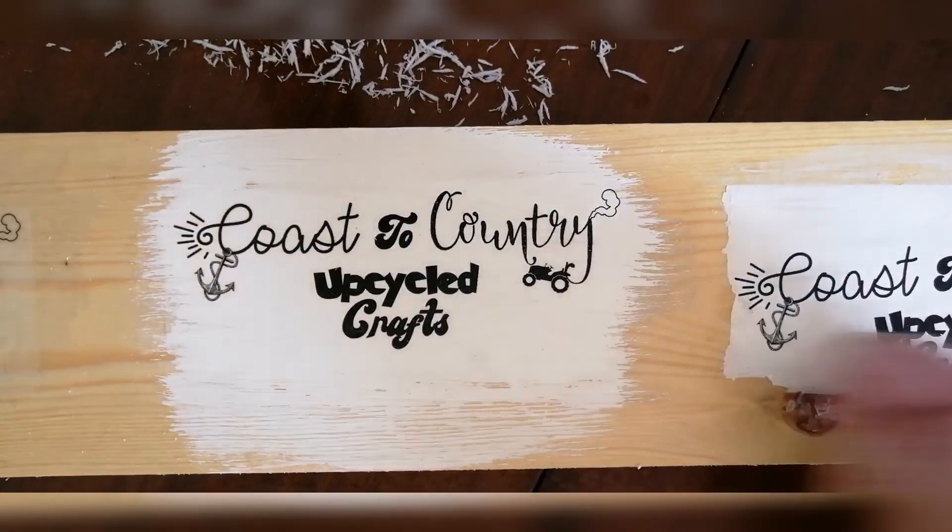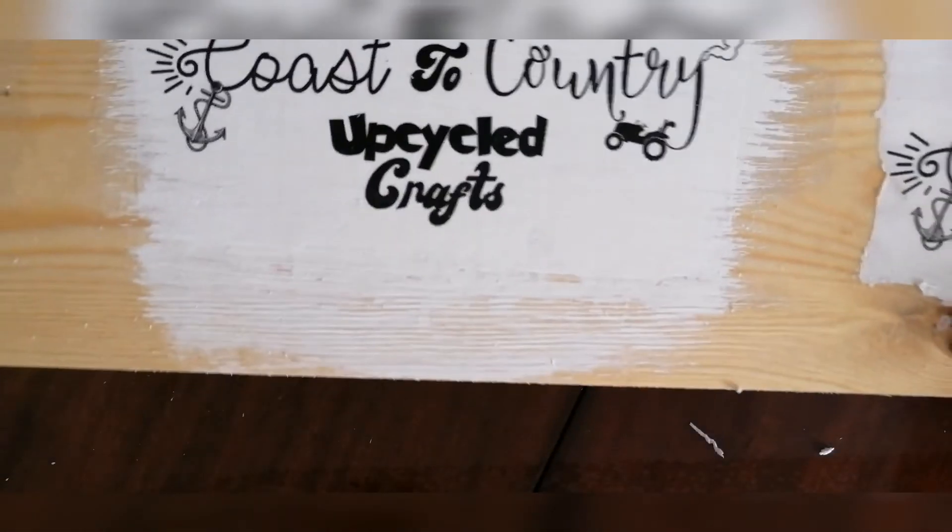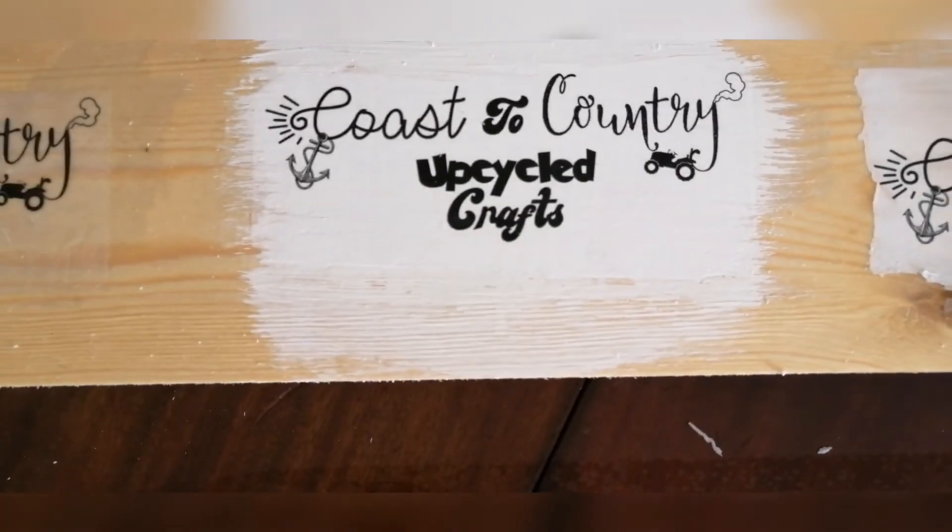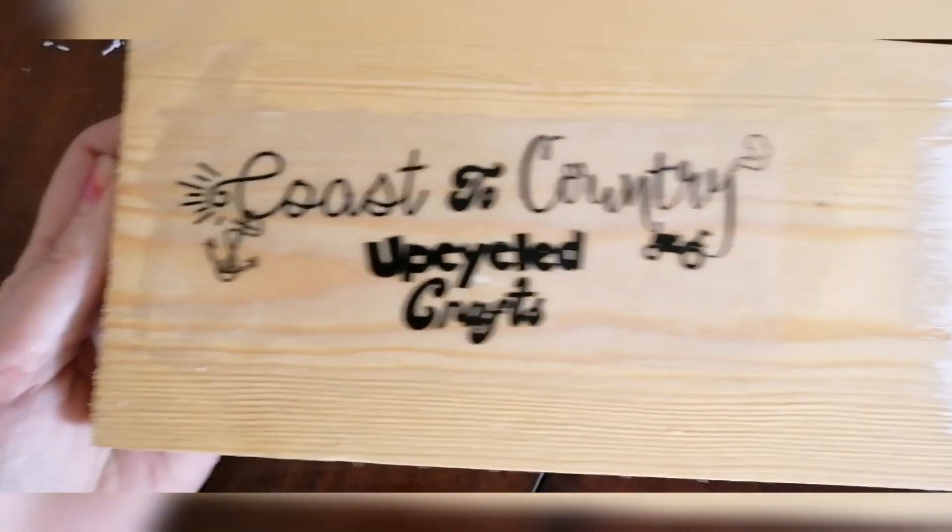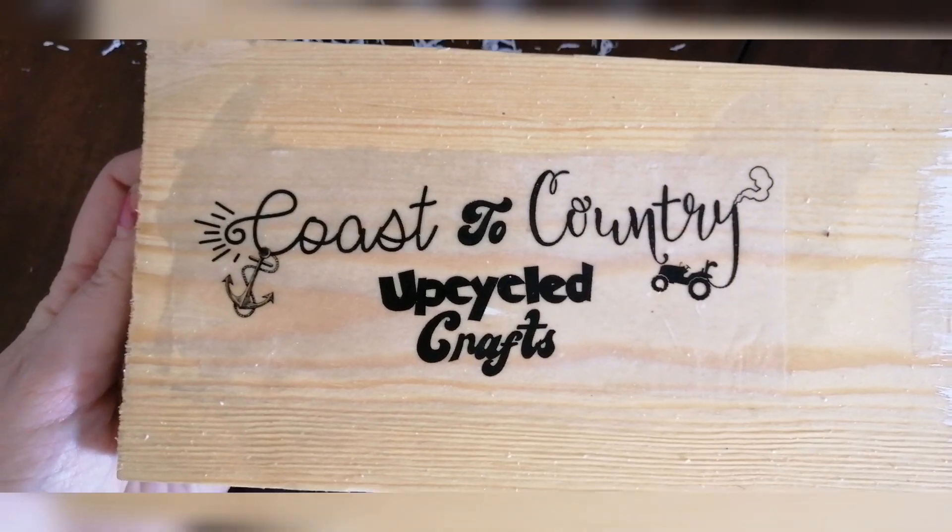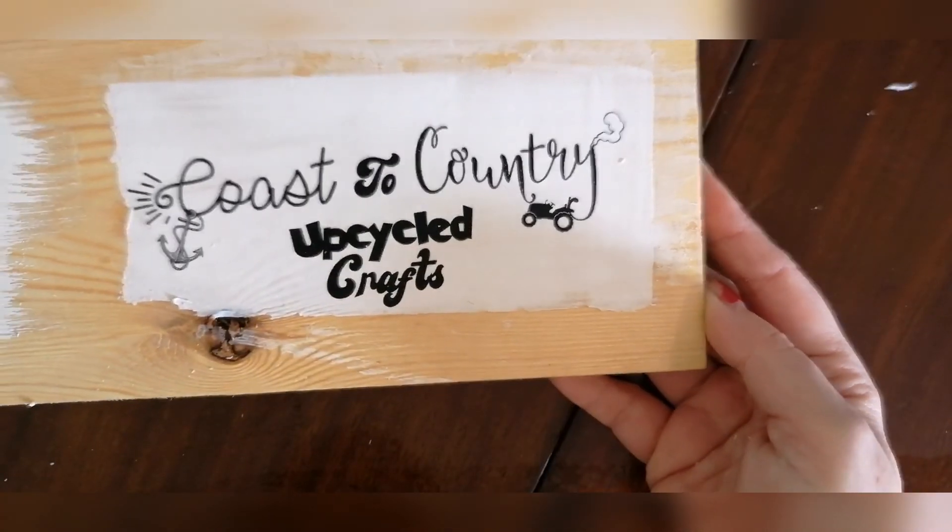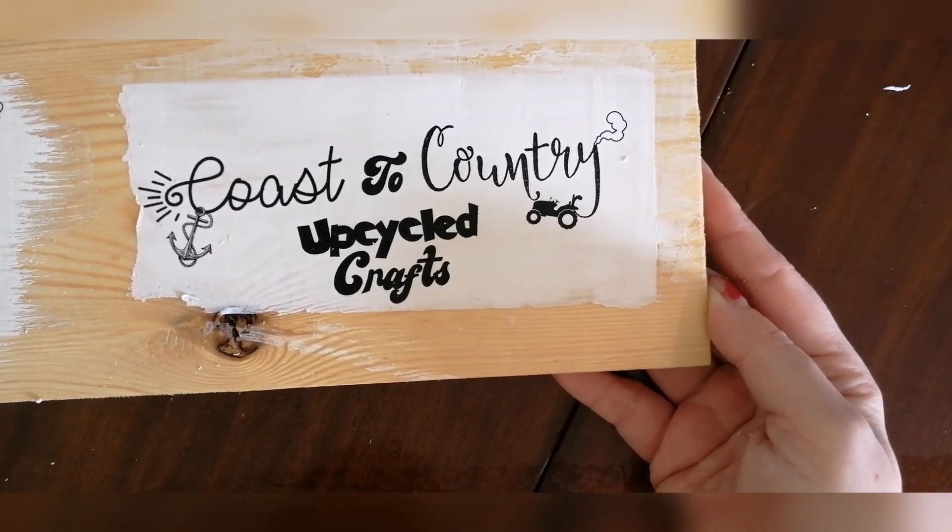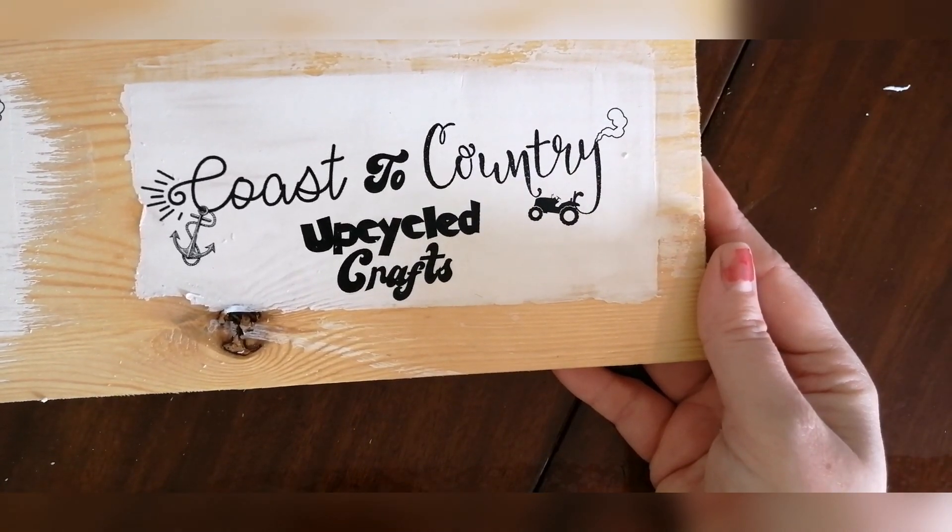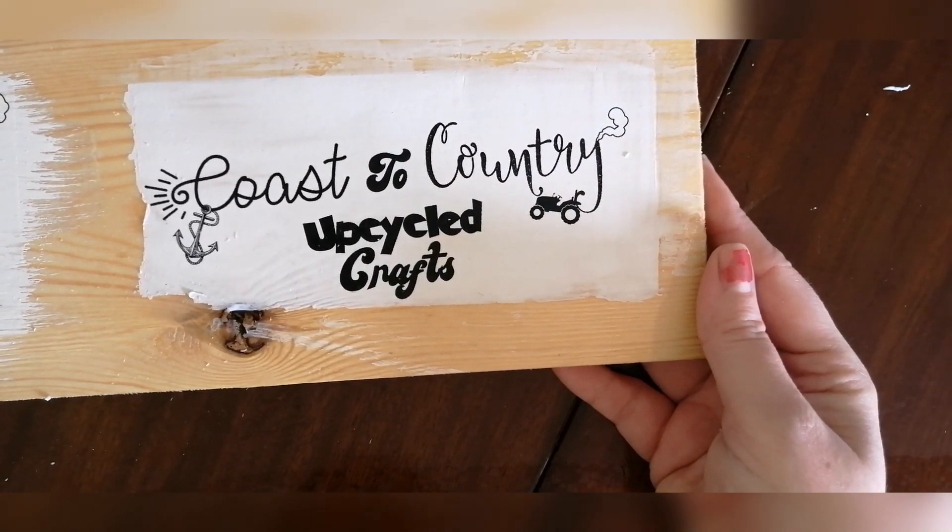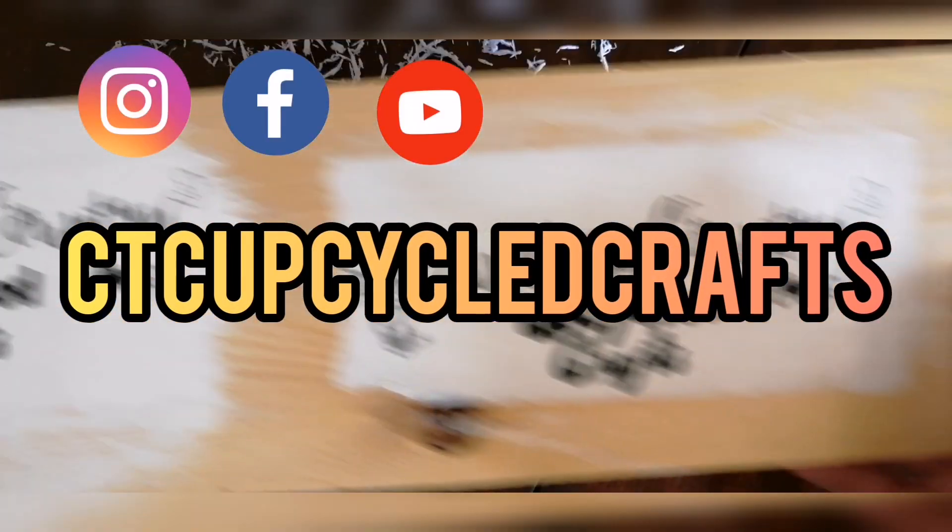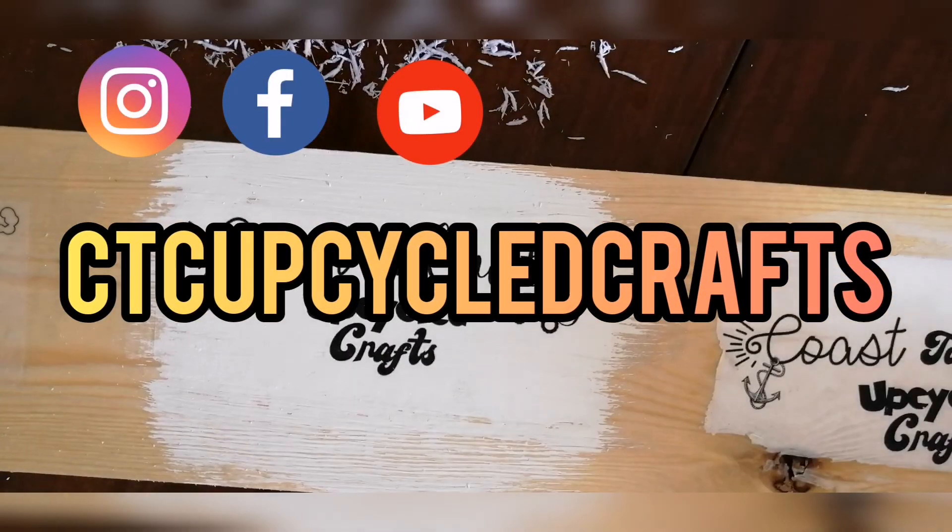And there we have it, three completely different finishes. The one in the middle is the one on chalk paint. The one on this side is the one with the wood grain showing through and the one on the end is the one with the image and this is why you shouldn't use this one because it has transferred the paper as well and I really don't like that look. Thanks for watching this has been CTC Upcycle Crafts.